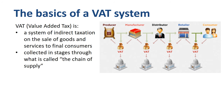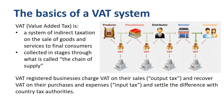VAT is collected in stages through what is called the chain of supply, as you see in the picture on the right. I will illustrate this chain of supply concept with numbers in the next part of the video. VAT registered businesses charge VAT on their sales — this is called output tax — and recover VAT on their purchases and expenses — this is called input tax — and settle the difference with country tax authorities.